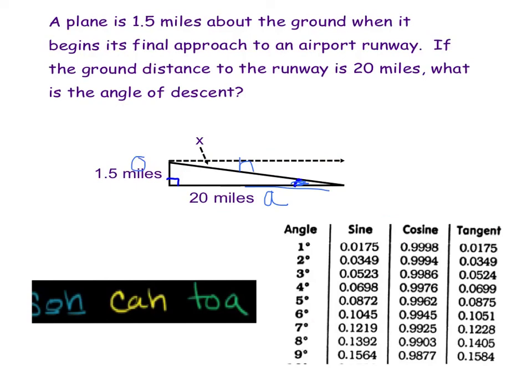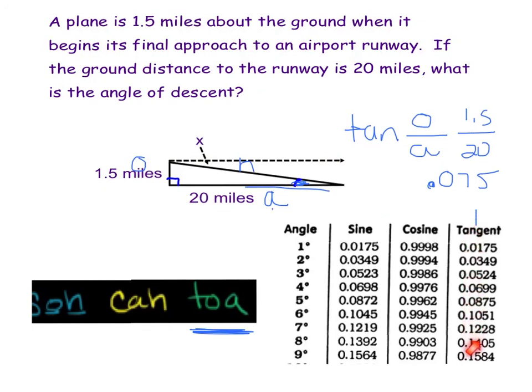So now I'm going to see which one deals with opposite and adjacent. Right here, tangent. Now I'm looking at the tangent of, and we don't know what our angle measure is. That's what we're looking for. So we're going to set up our ratio of opposite to adjacent. Opposite is 1.5 to 20, and we need it in decimal form to be able to read our table. So do 1.5 divided by 20, and it gives us approximately, well, exactly 0.075. So again, I'm looking at my tangent column.